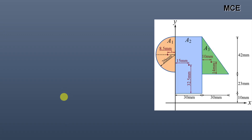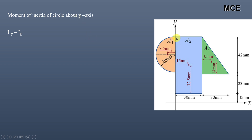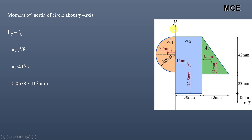Now we find the moment of inertia of the semicircle about the y-axis. Since the y-axis is at the base of the semicircle, we can directly use the formula: Iy = πr⁴/8. Substituting r = 20 mm gives Iy = π(20)⁴/8 = 0.0628 × 10⁶ mm⁴. The unit of moment of inertia is m⁴ or mm⁴.